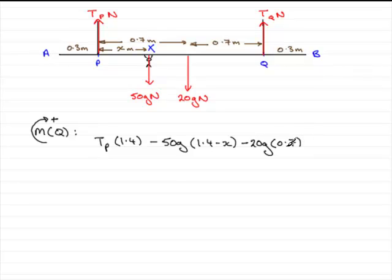And this is the resultant moment now. We've taken into account all the forces. Remember, this force, because it passes through Q, would be TQ times 0, if you like, which would be 0, have no effect at all on the turning. So this is the resultant moment. And because the beam is in equilibrium, it doesn't turn. That resultant moment is 0.